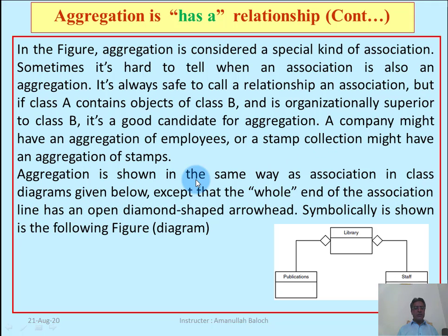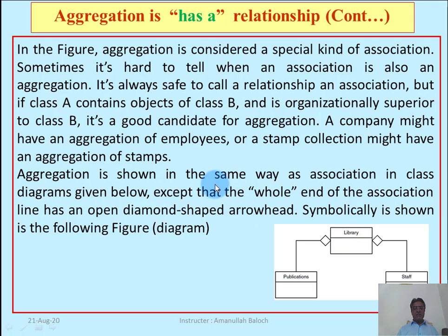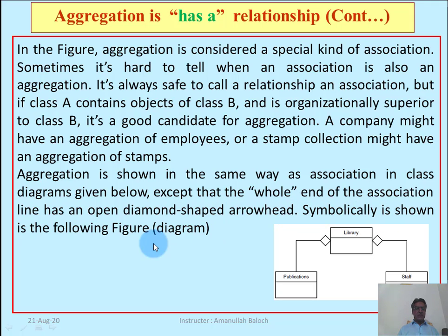Aggregation is shown in a class diagram using a hollow diamond-shaped arrowhead at the whole end of the association line. The end which touches the whole — not the part — is represented with a hollow diamond symbol.